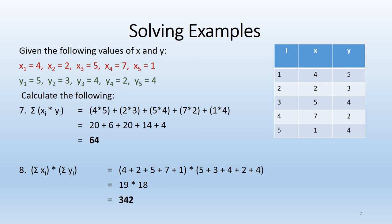In number eight, we're also working with both x and y, but now we've got the parentheses breaking this apart into two different equations that we need to handle prior to multiplying the answers together. The first one is just summing up all the x values, 4, 2, 5, 7, and 1. The second part is summing up all the y values, 5, 3, 4, 2, and 4. Get an answer for each one of those and then move on down the line of PEMDAS to multiplication and multiply 19 times 18 and we end up with an answer of 342.